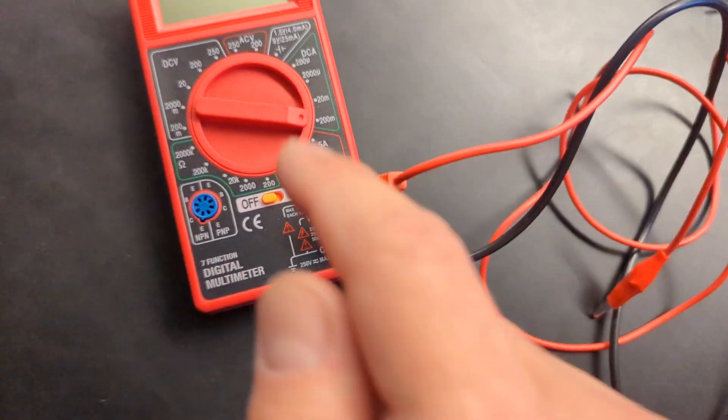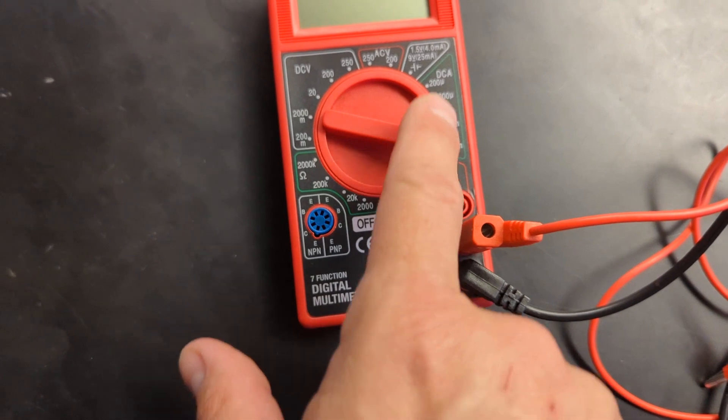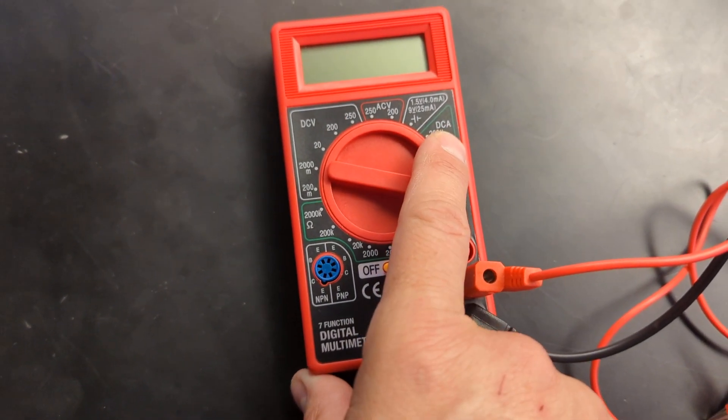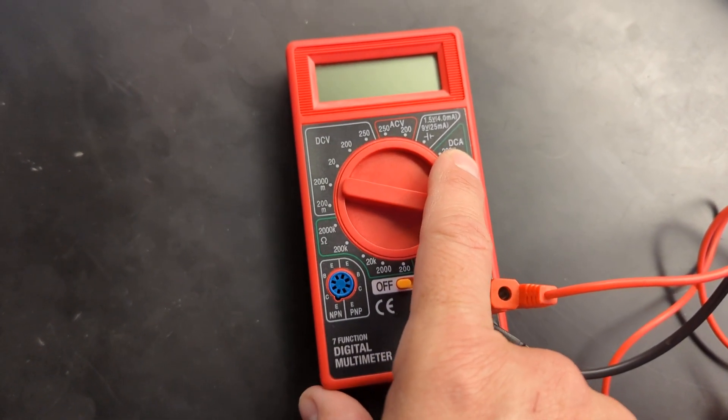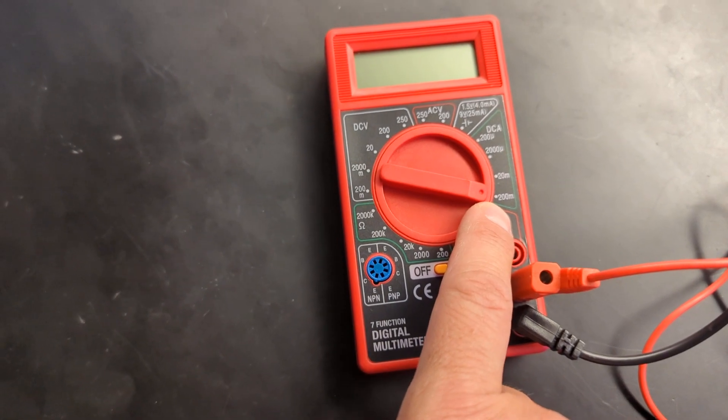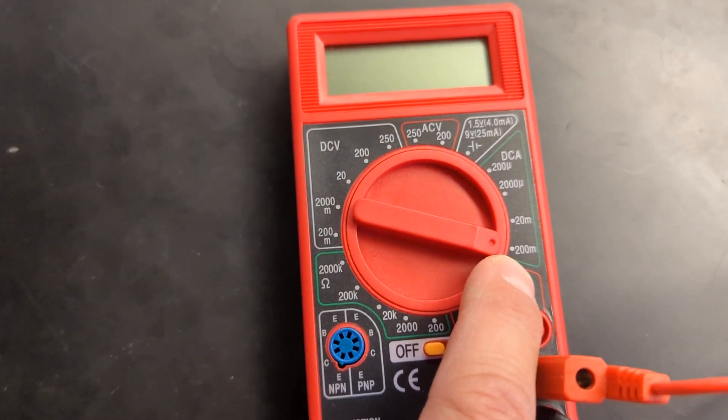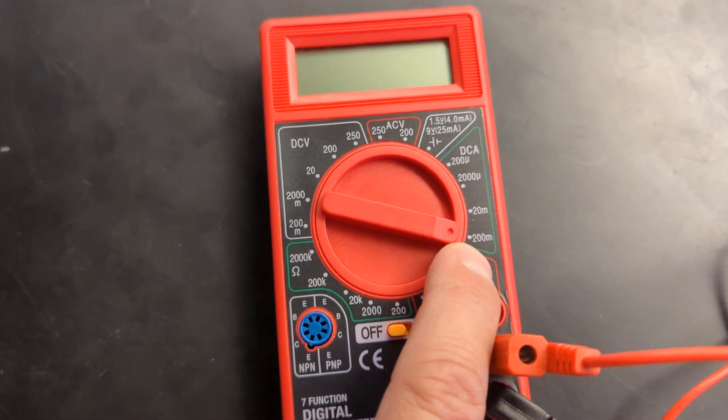To measure current, the dial is set to DC for direct current like batteries, and then A for amps. Measuring current, we have the dial in that section on the 200m, meaning that it'll measure up to 200 milliamps.